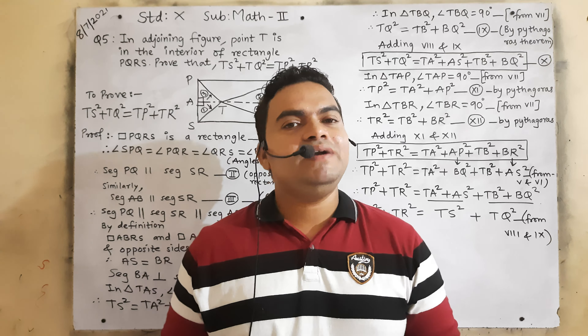See the steps. Question number 5 of practice set 2.2: in the adjoining figure, point T is the interior of rectangle PQRS. It is mentioned that this figure is of a rectangle — PQRS is a rectangle and point T is in the interior of rectangle. Prove that TS² + TQ² = TP² + TR².